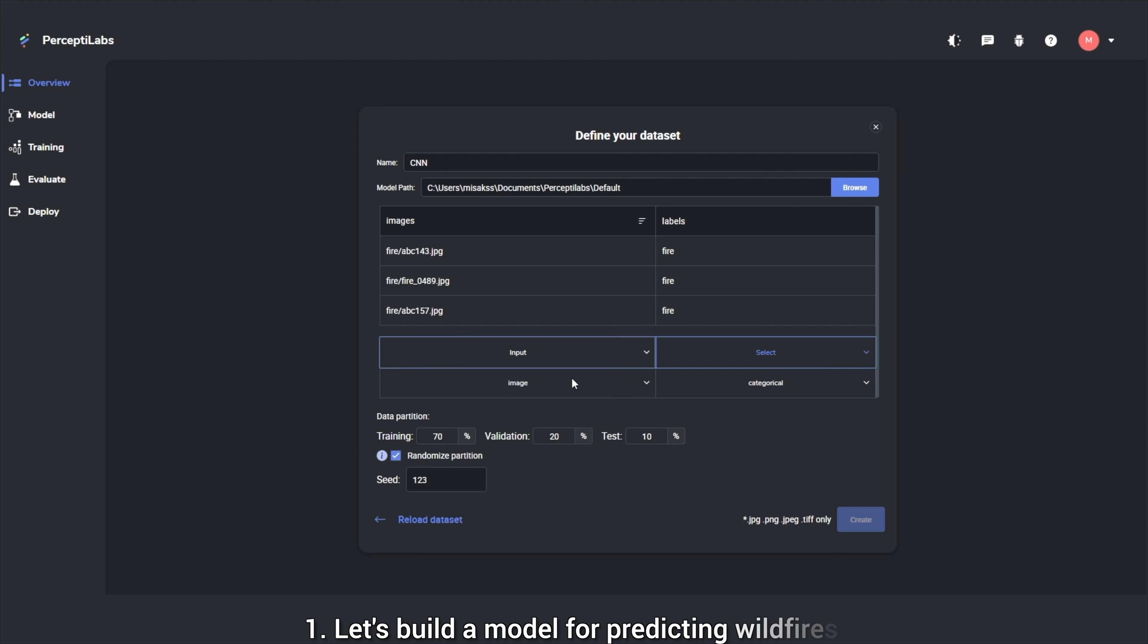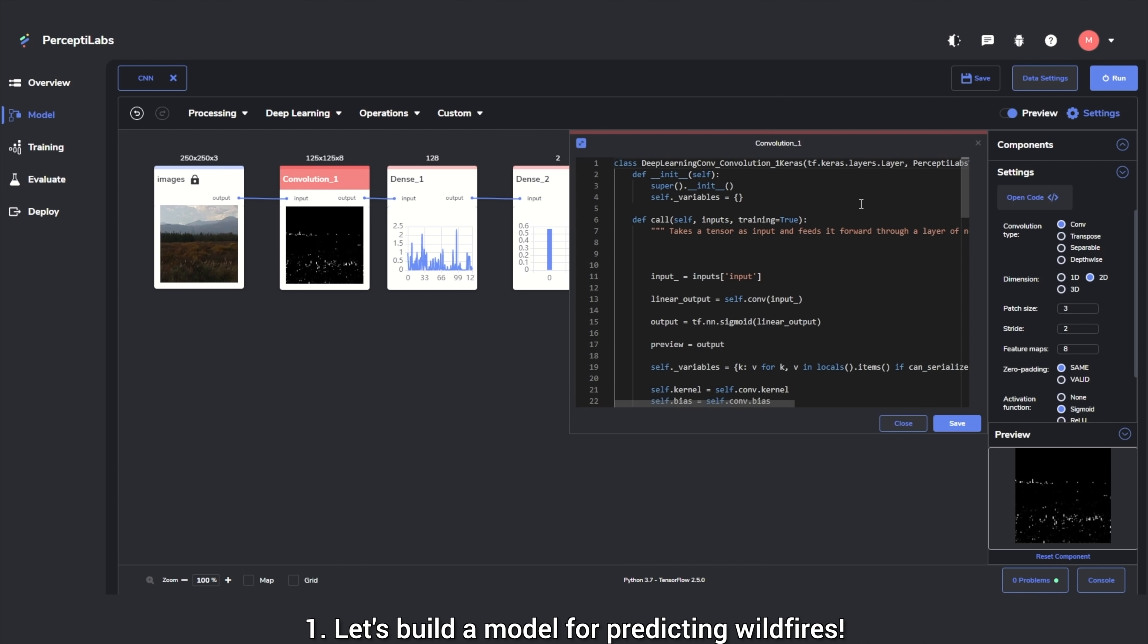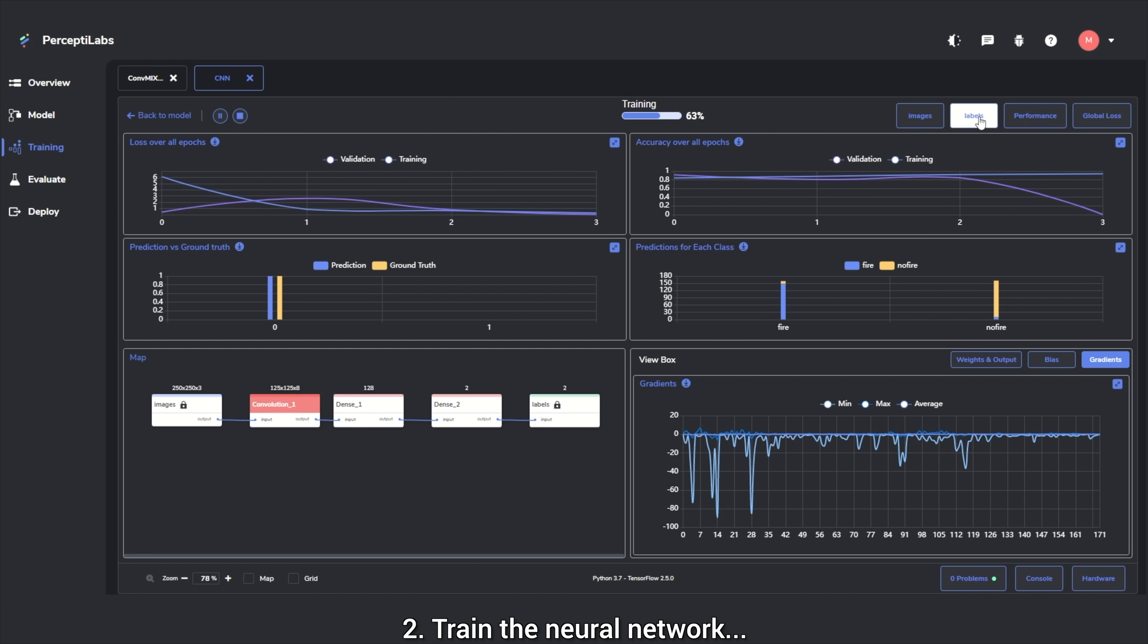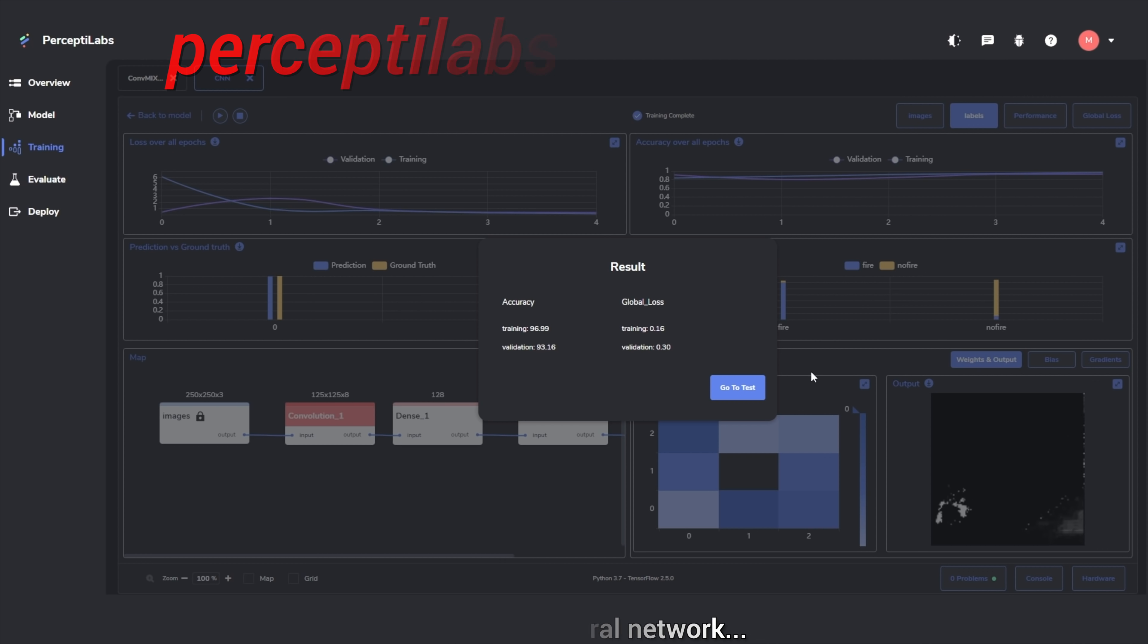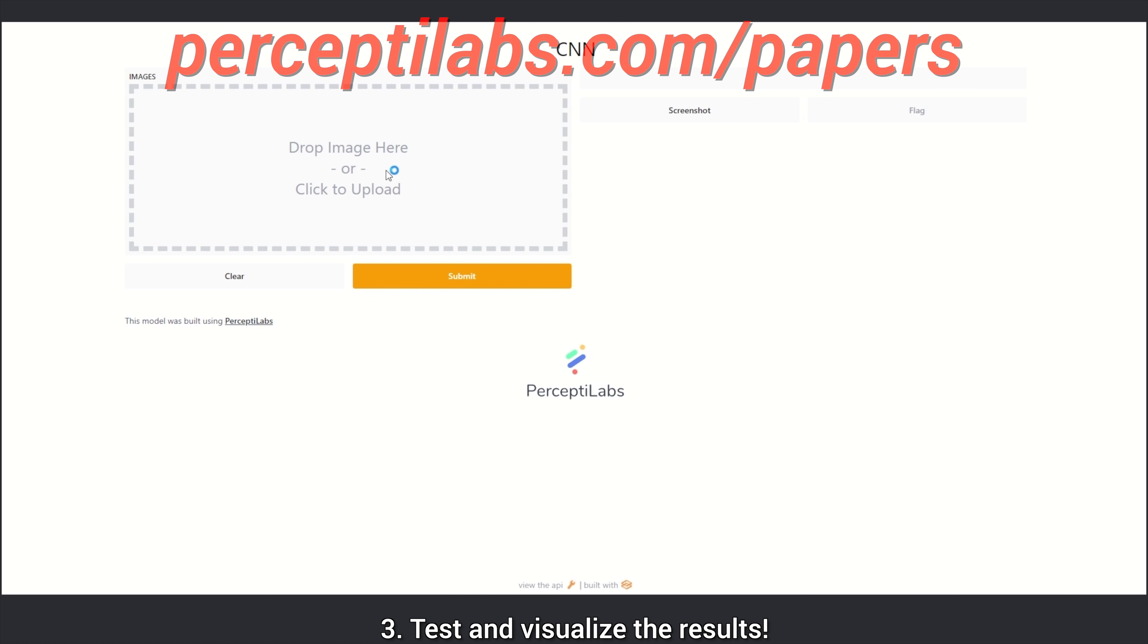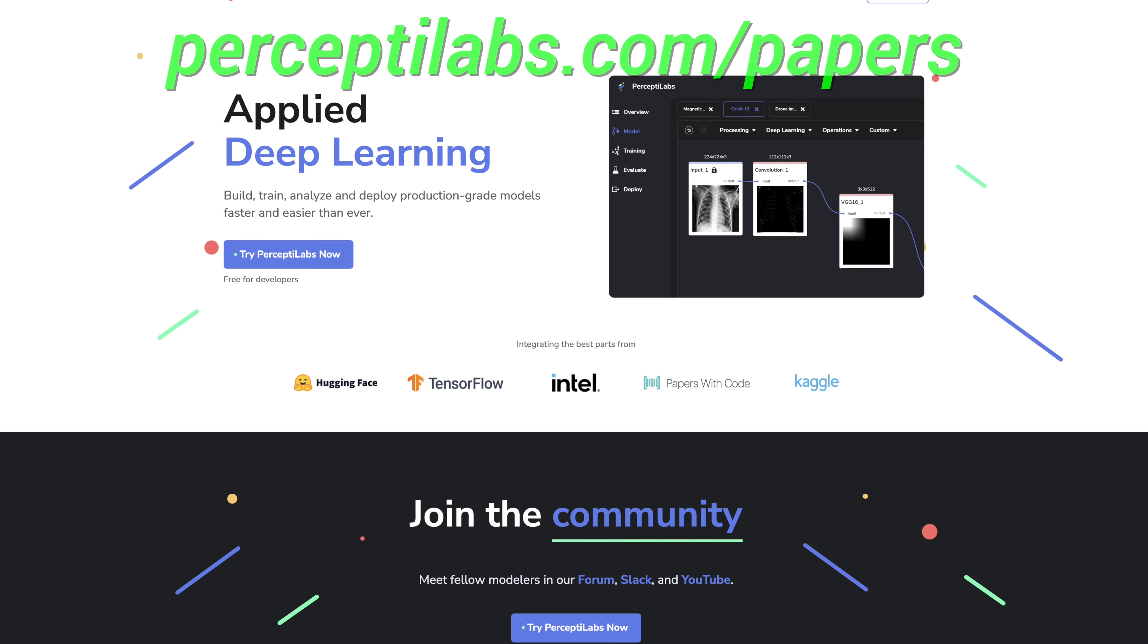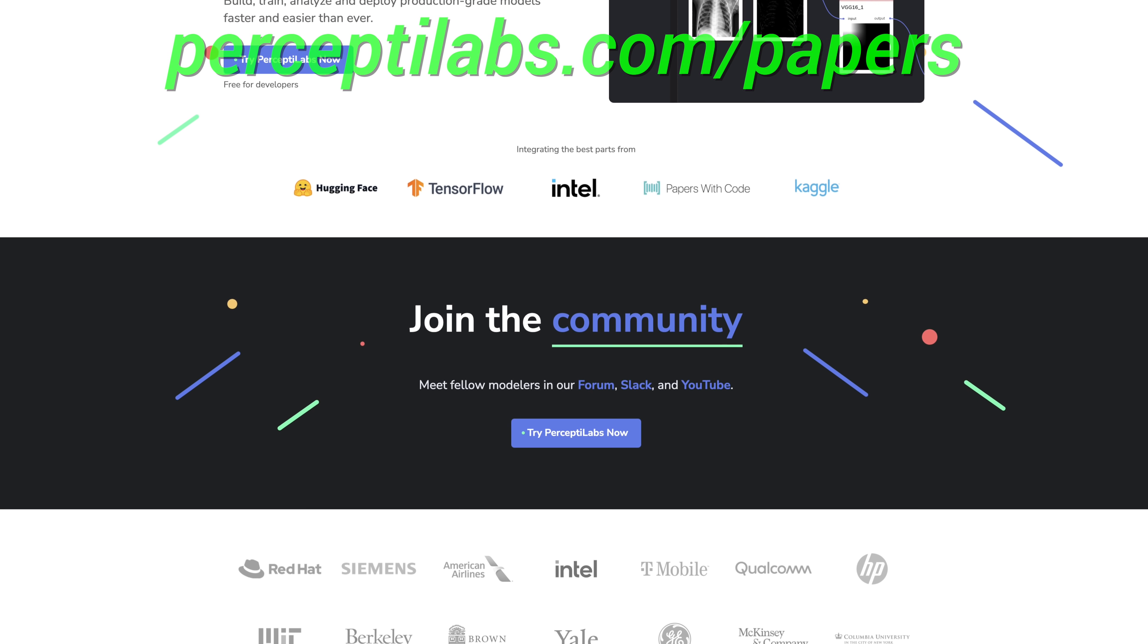PerceptiLabs is a visual API for TensorFlow, carefully designed to make machine learning as intuitive as possible. This gives you a faster way to build out models with more transparency into how your model is architected, how it performs, and how to debug it. And it even generates visualizations for all the model variables, and gives you recommendations both during modeling and training, and does all this automatically. I only wish I had a tool like this when I was working on my neural networks during my PhD years. Visit perceptilabs.com/papers and start using their system for free today. Our thanks to PerceptiLabs for their support and for helping us make better videos for you.